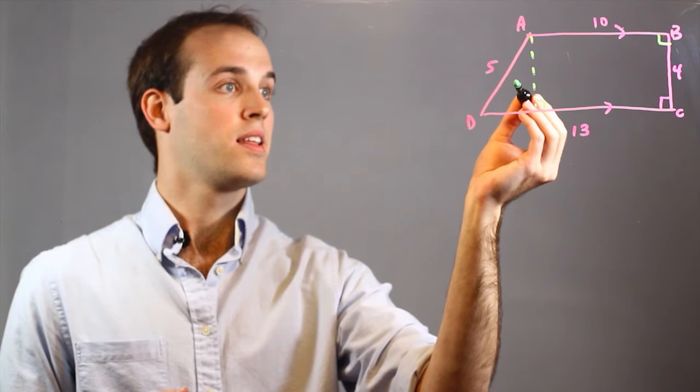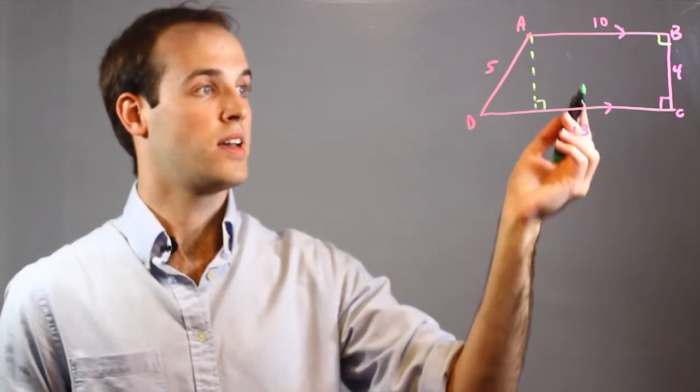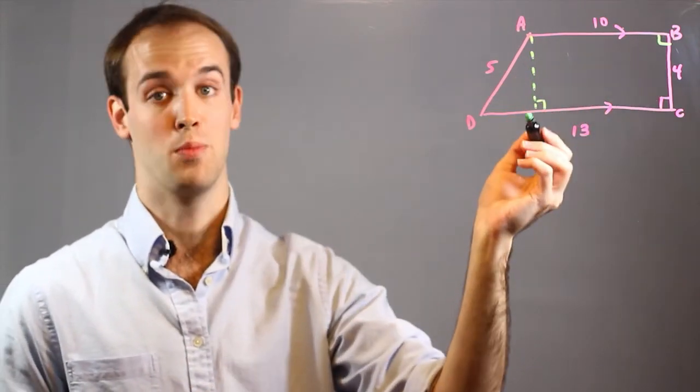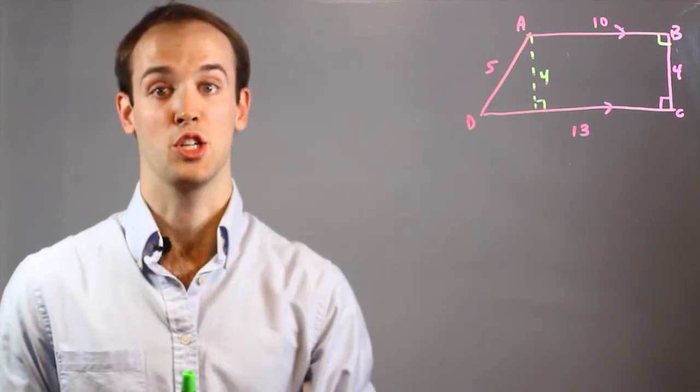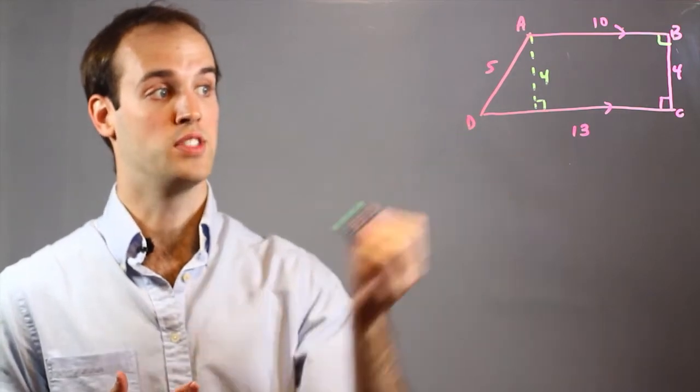Now if I know that this side is 5 and since I made a rectangle over here I know that this altitude must be 4, I can use a trigonometric function to find angle D.